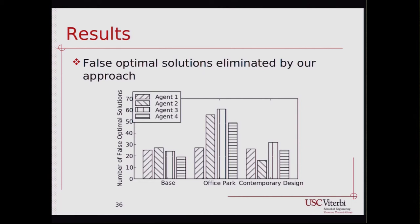By using our approach, we are also able to eliminate falsely reported first-ranked solutions. When an agent tries to find solutions, it finds its own Pareto frontier with a set of first-ranked solutions. But when everything is ranked together, some of those disappear because they are dominated by better solutions proposed by the team. We show how many solutions were falsely reported as optimal that we are able to eliminate using our approach, leaving the designer with only truly high-quality solutions to choose from.